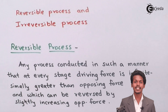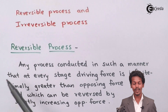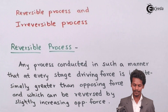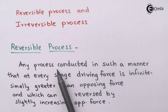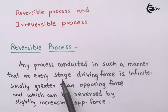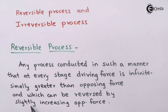We are going to discuss what is the reversible process and what is the irreversible process. For the reversible process, the definition is: any process conducted in such a manner that at every stage the driving force is infinitesimally greater than the opposing force, and which can be reversed by a slight increase in the opposing force.